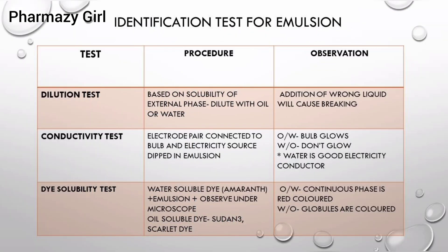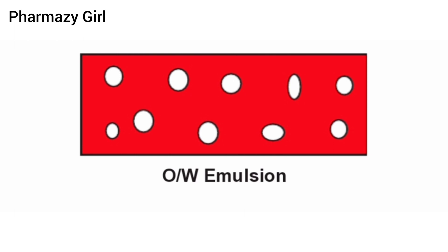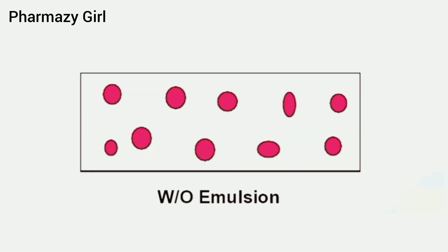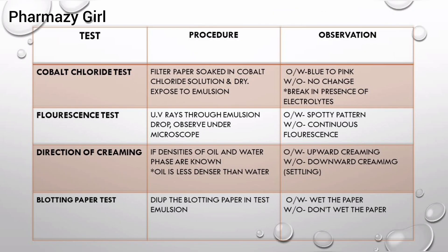The third test is the dye solubility test. In this test, red colored dyes are used to detect the type of emulsion. Amaranth dye is a water soluble dye, and Sudan 3 and Scarlet dye are oil soluble dyes. If you add amaranth dye to your emulsion and the emulsion shows uniform red color, it means the emulsion is oil in water emulsion, as amaranth dye is soluble in water. But if you see red color spots in the emulsion, then it means the test emulsion is water in oil emulsion, because water is the dispersed phase. Similarly, Sudan 3 and Scarlet dye will color the oil phase.